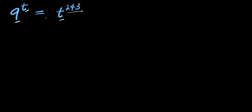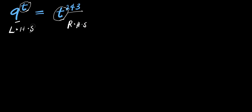Now we have a variable here which is t, and we have another variable here. So what we can do is to move all the variables to one side, probably to the right hand side, and all the numbers will be on the left hand side.